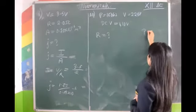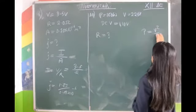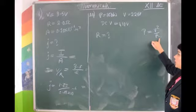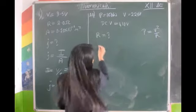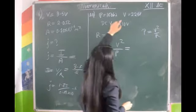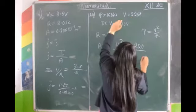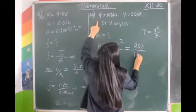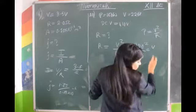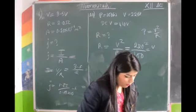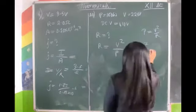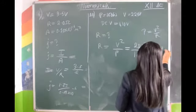From the equation of power P = V² / R, we can find resistance. R equals V² / P. The voltage of the bulb is 220V and power is 100W. After doing the calculation, the resistance becomes 484 ohm.